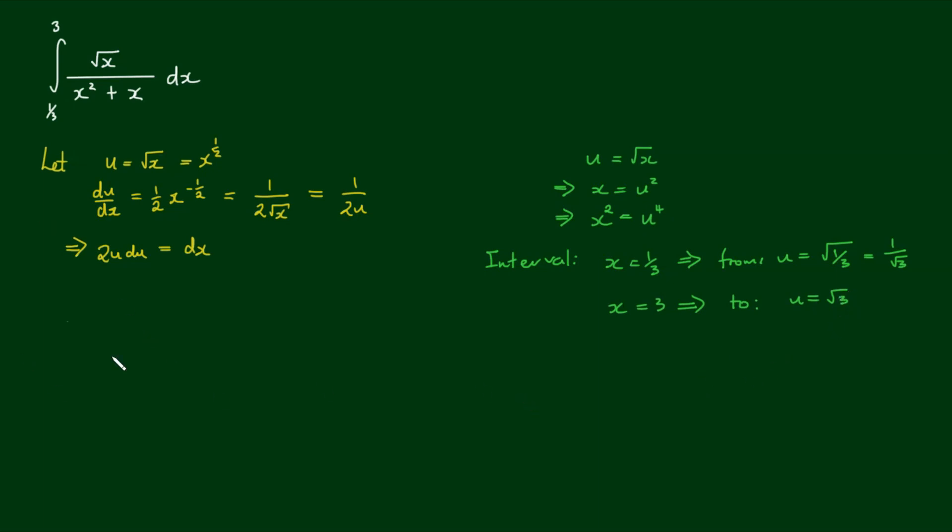So now we can make all the substitutions. The integral from one third to three of the square root of x on x squared plus x dx is equal to the integral from u equals one on root three to u equals root three. The square root of u is equal to u divided by x squared is equal to u to the fourth power, x equals u to the second power, or u squared, and dx is equal to two u du.